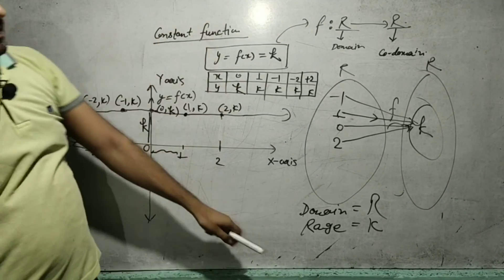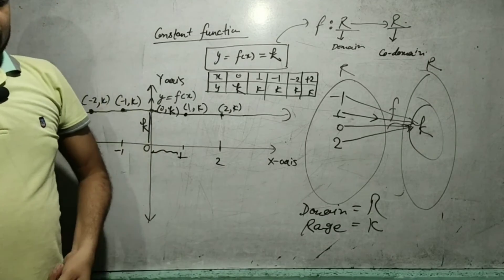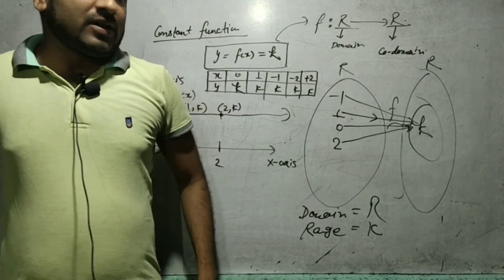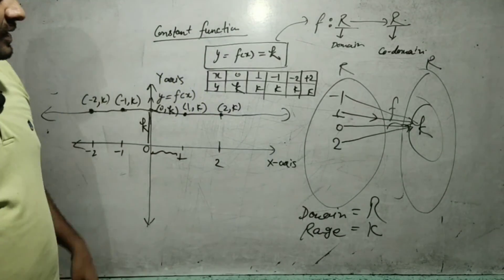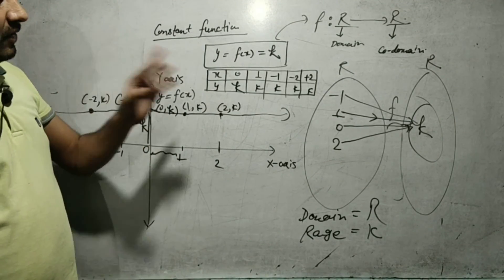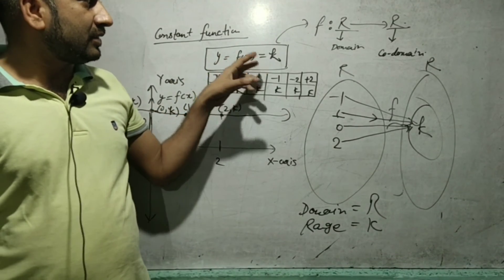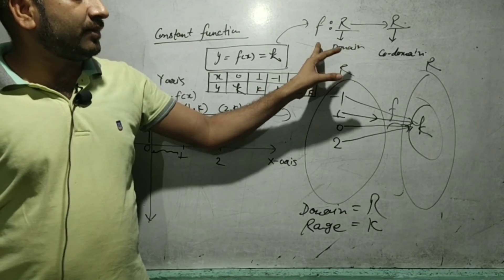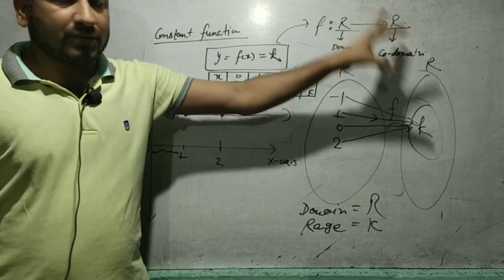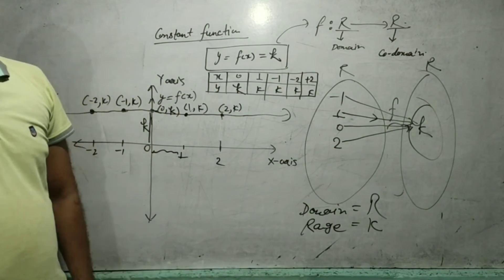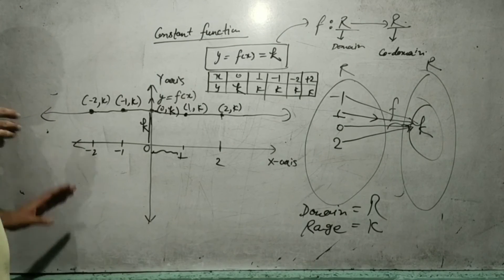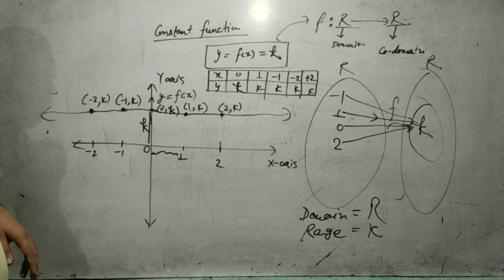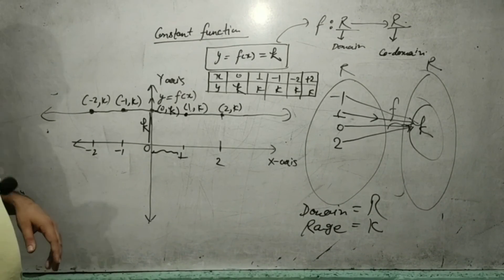This is the graph of the constant function. Tomorrow I will discuss the rational function, which is a very important function. The constant function is represented as f(x) = k, and the function is defined from real number to real number. Thank you, students.